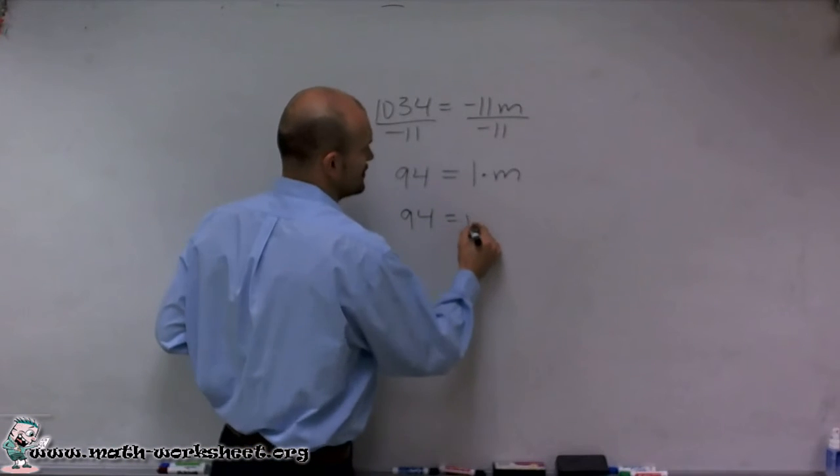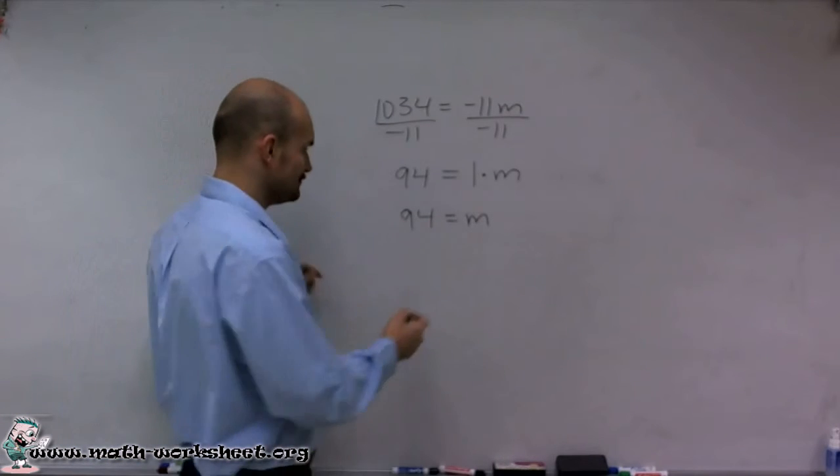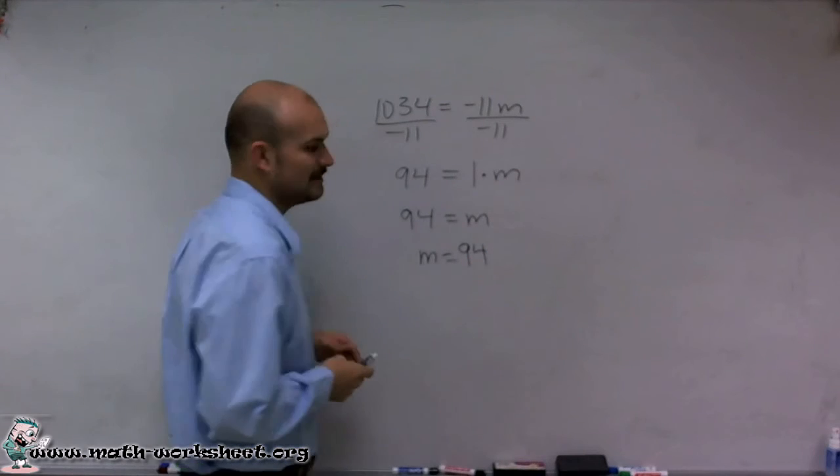So therefore, you can see now, I have my variable by itself. And a lot of times, we just like to rewrite this with the variable in front, where m is going to equal 94.